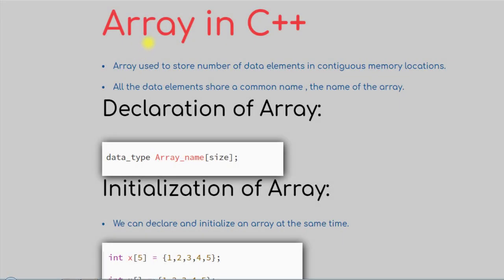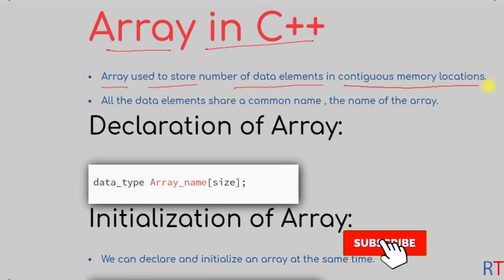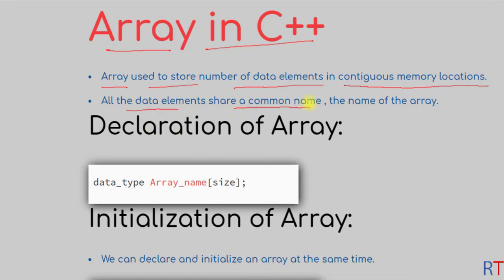In this video we're going to talk about arrays in C++ programming. An array is used to store a number of data elements in contiguous memory locations, and all the data elements share a common name, which is the name of the array. To declare an array, first you have the data type, then the name of the array, and then inside the square bracket we specify the size of that array.